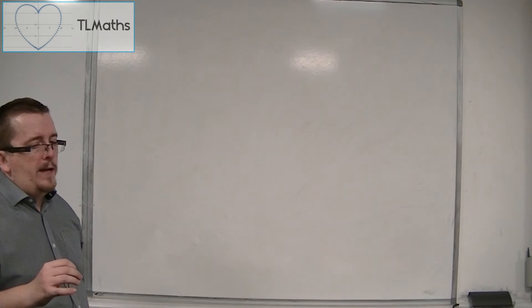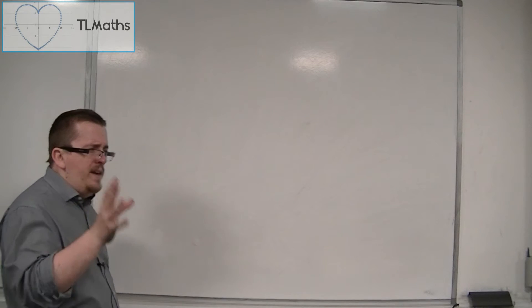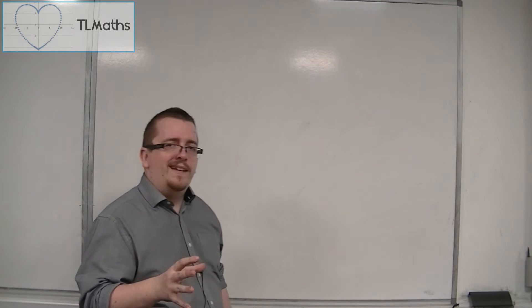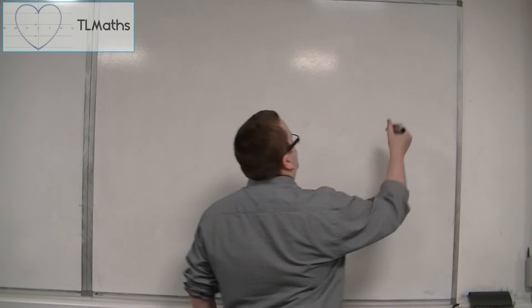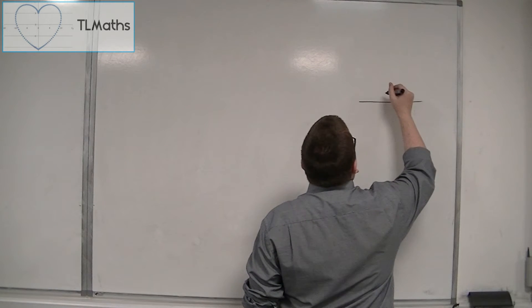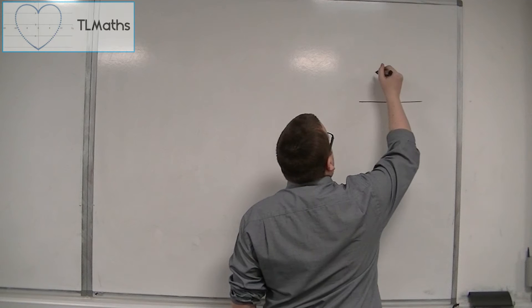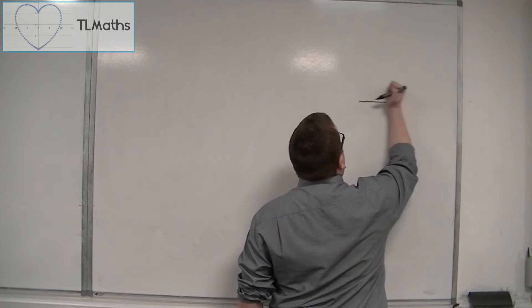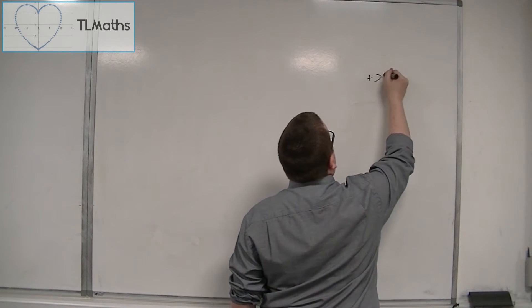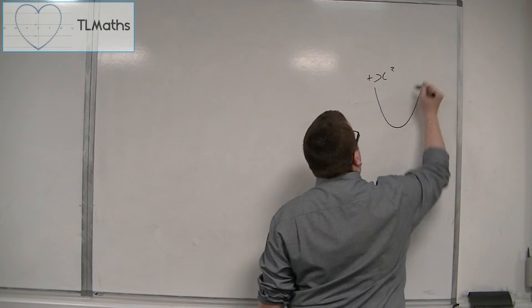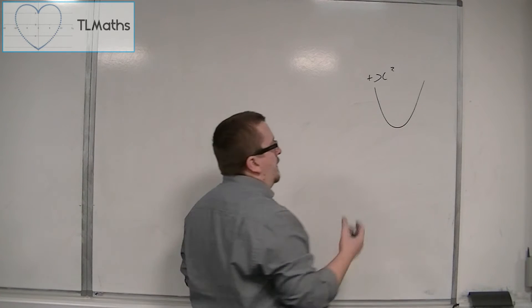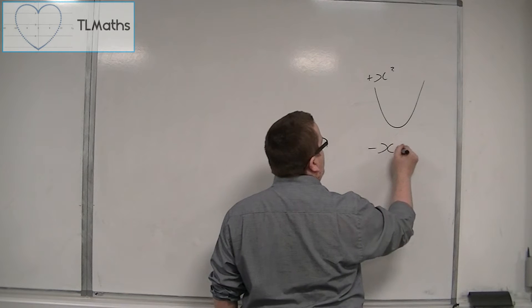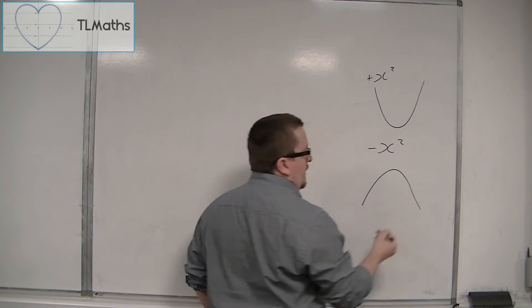Let's start off with reminding ourselves of quadratics. So for quadratics, we know that in general, if you have a positive x squared, then the shape will look like a positive parabola, like a happy face. And if it's a negative x squared, then it will be a sad face, an upside down parabola.